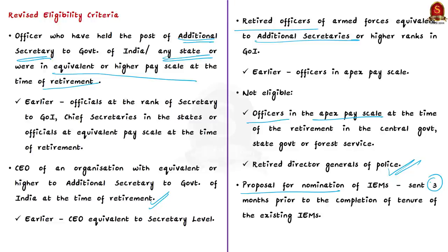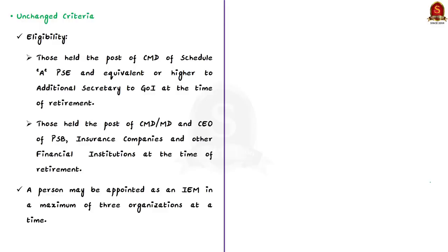Certain criteria have remained unchanged in the new rules. Persons who held the post of Chairman-cum-Managing Director of a Schedule A public sector enterprise, equivalent or higher to Additional Secretary at the time of retirement, remain eligible. Similarly, persons who held the post of CMD, MD, or CEO of public sector banks, insurance companies, and other financial institutions at retirement remain eligible. The criterion that a person may be appointed as IEM in a maximum of three organizations at a time has also been kept unchanged.